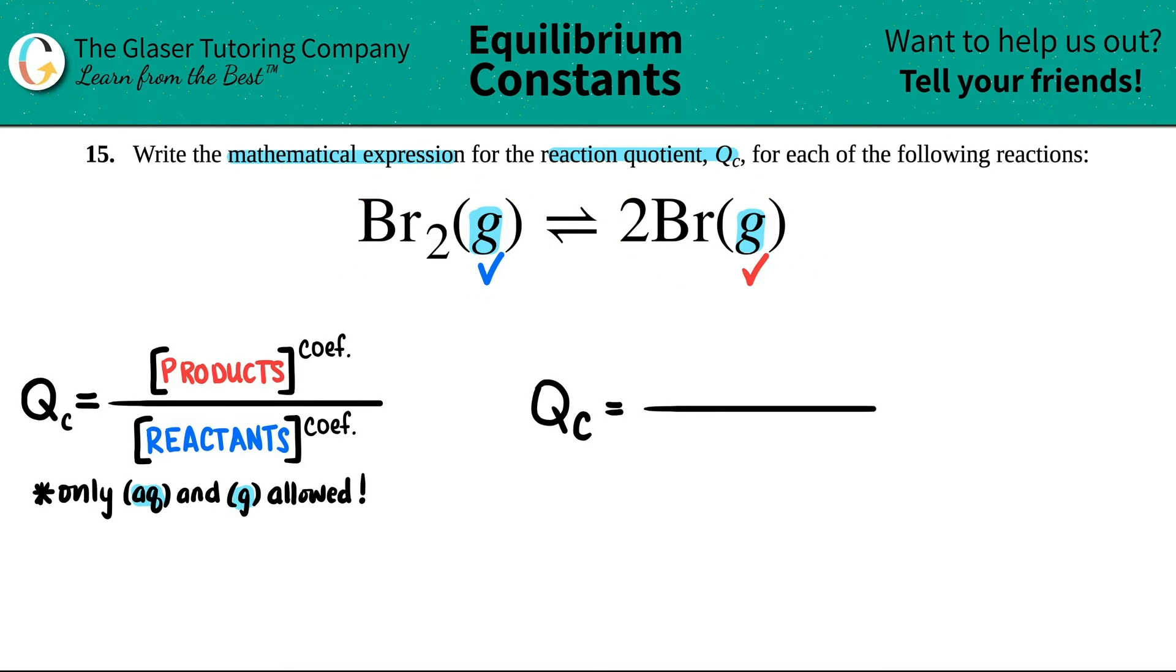Products divided by reactants. So I'm going to put my bracket here. I'm going to say what product I have. It's the Br. So I got Br. Close the bracket. And now I got to raise it to the coefficient, the big number in the front. There was a 2 in front of here. You see this? 2Br. So what do you think I'm going to have to raise it to? Yeah, the second.